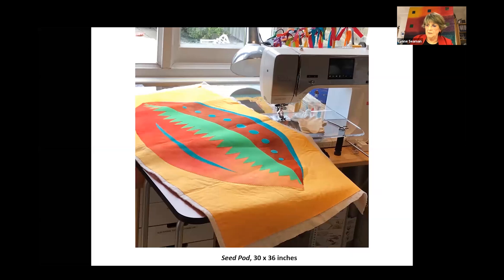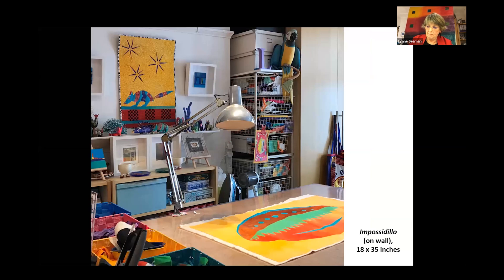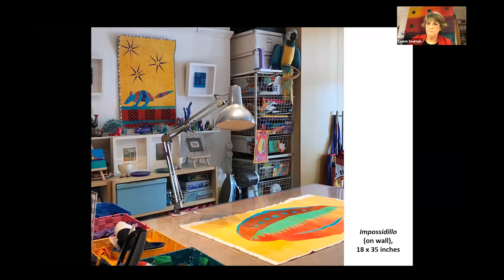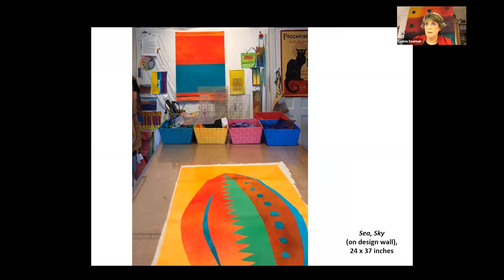My home studio is in a former bedroom in my house in London, with a beautiful view of my back garden while I'm sewing. The quilt getting ready to be sewn is called Seed Pod. This is my main work table, which is two meters by one meter. The work on the wall above my collection of Mexican wooden folk art animals is called Impossidillo and was in a jury memorial exhibition for Yvonne Porcella called Live Your Brightest Life. On the design wall is the newest piece in my Lines series — the working title is Sea and Sky.